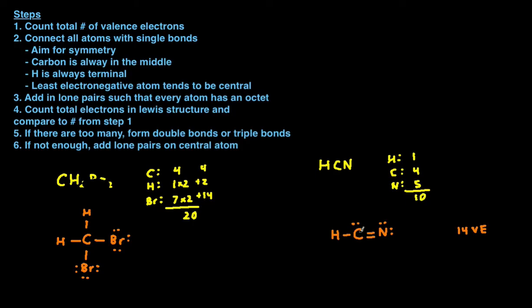After forming the double bond, I recount: two, four, six, eight, ten, twelve — now I have twelve, but I want to get to ten, so I still have too many. I'm going to form another bond by erasing another lone pair from carbon and another from nitrogen to form a triple bond. Recounting after the triple bond: two, four, six, eight, ten — that matches up. So that's the final Lewis structure of HCN.